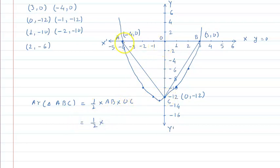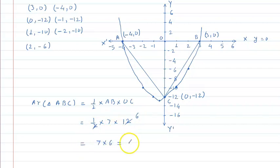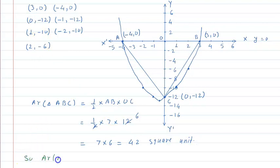Base AB lete hain aur height OC. Area = 1/2 into AB into OC. A se O tak 4 units aur O se B tak 3 units, to AB = 7 units. OC = 12 units. So area = 1/2 into 7 into 12 = 7 into 6 = 42 square units. So area of triangle is equal to 42 square units.